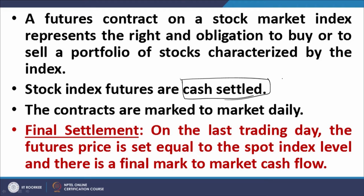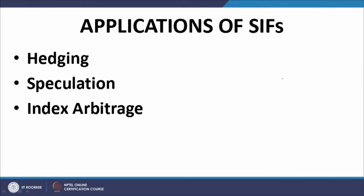Now we talk about applications of stock index futures. The three fundamental applications are: first, hedging — the most important application; second, speculation, where you take a position based on your perspective of the market's evolution, and if the market evolves as per your perception you make a profit, otherwise you make a loss on your open position; and third, index arbitrage, where if there is a differential between the arbitrage-free price of the futures contract and the actual traded price, you can extract profit out of the system.